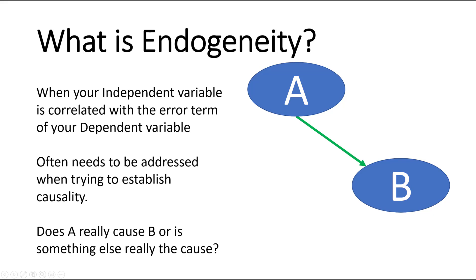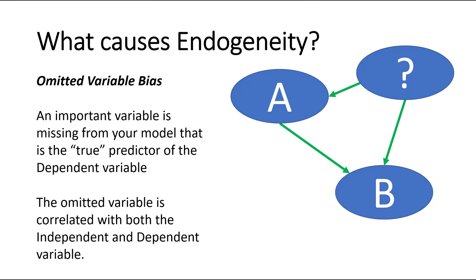When it comes to indigeneity, what causes it? There are usually two things. One is what they call omitted variable bias — maybe there's an important variable that's missing and it's really the true predictor of your dependent variable. In a simple model with A and B, maybe there's an omitted variable that influences A but also equally influences B, and that omitted variable is really the true independent variable influencing B, not A.